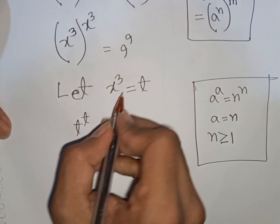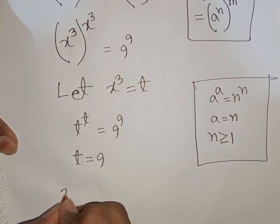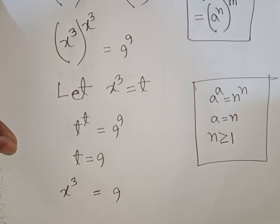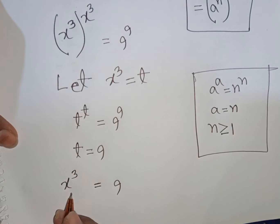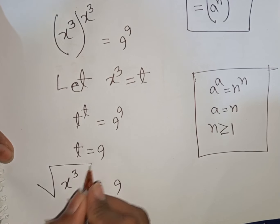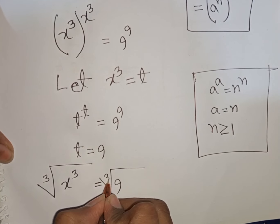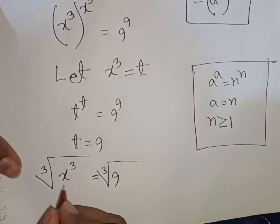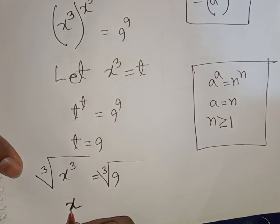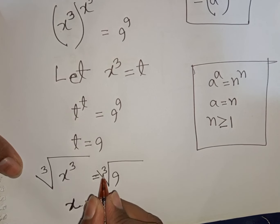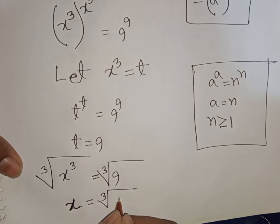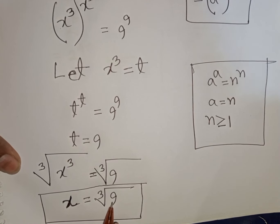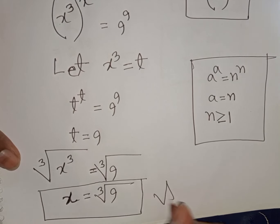Remember that x power 3 was substituted by t, so x power 3 equals 9. To find x, we apply the cube root to both sides: cube root of x cubed equals cube root of 9. The cube root and power 3 cancel on the left, giving x equals cube root of 9. This is our final answer.